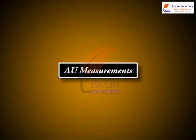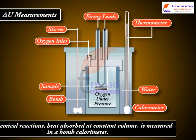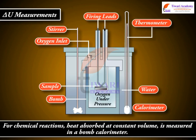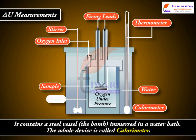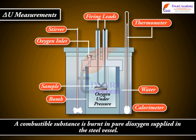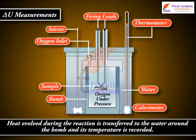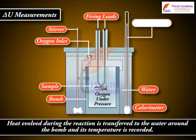For delta U measurements in chemical reactions, heat absorbed at constant volume is measured in a bomb calorimeter. It contains a steel vessel — the bomb — immersed in a water bath. The whole device is called a calorimeter. A combustible substance is burnt in pure di-oxygen supplied in the steel vessel, and heat evolved during the reaction is transferred to the water around the bomb, with its temperature recorded.